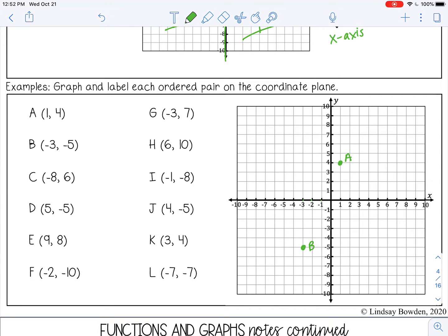C is at negative eight, six. So I'm going to go left eight, and then up six. And D is at positive five, negative five. So I'm going to go right five, down five.